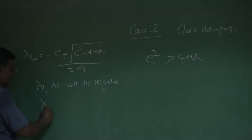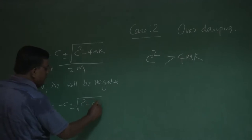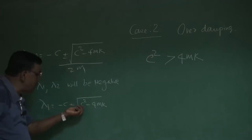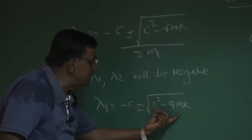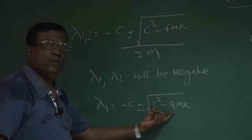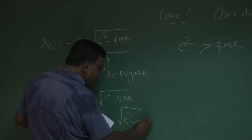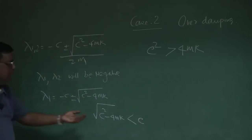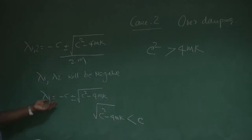Lambda 1 is minus c plus minus under root c square minus 4mk. This c square minus 4mk — since m and k are positive — will always be less than c square, or this root c square minus 4mk is always less than c, because something has been subtracted from c square. If this were 0, they would have been equal. So naturally lambda 1 will be negative and lambda 2 also will be negative.